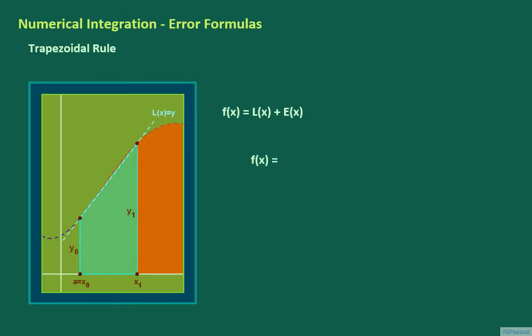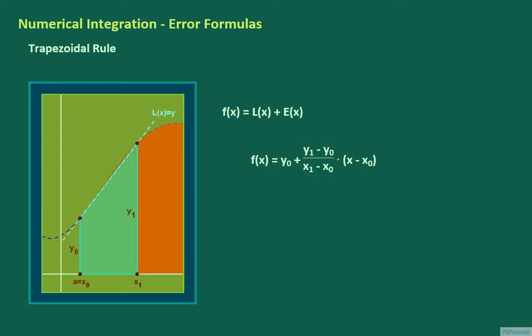One can easily find a formulation for the linear function capital L of x and check that it is equal to y sub 0 plus the slope of the secant line, which is y sub 1 minus y sub 0 divided by x sub 1 minus x sub 0, and this we multiply by x minus x sub 0. The formula for E of x for the linear function capital L of x is well known. It is given by f double prime of c star divided by 2 factorial times the quantity x minus x sub 0 times the quantity x minus x sub 1. Here, c star is some value within the interval from x sub 0 to x sub 1.